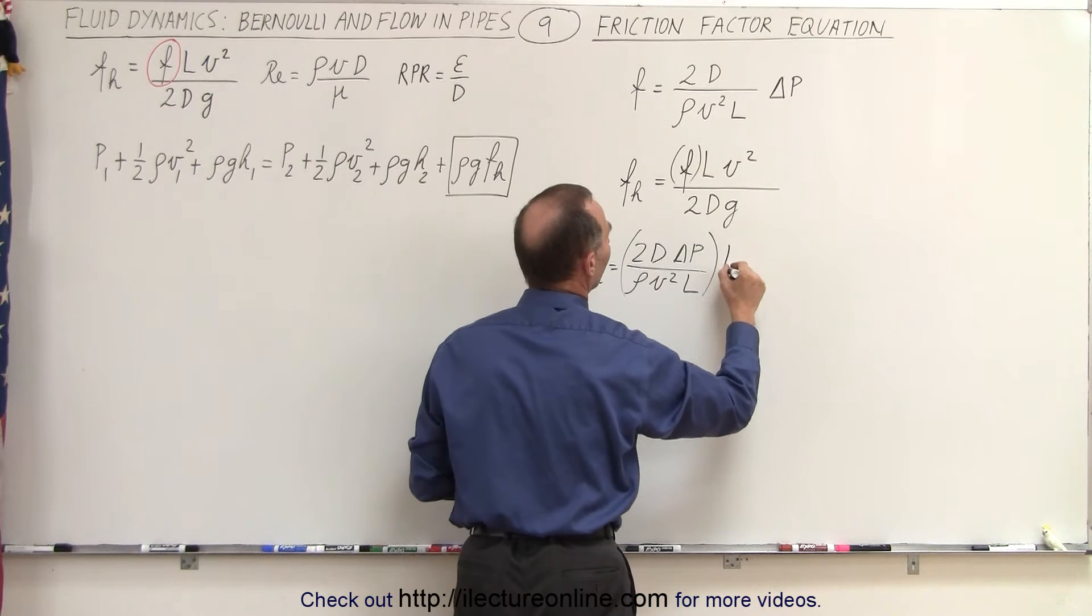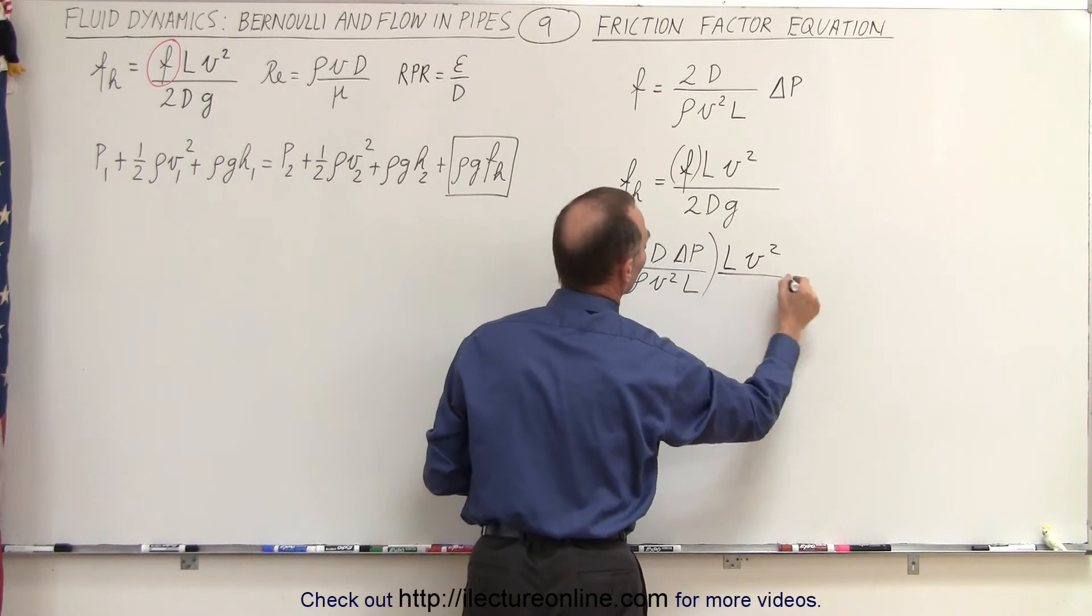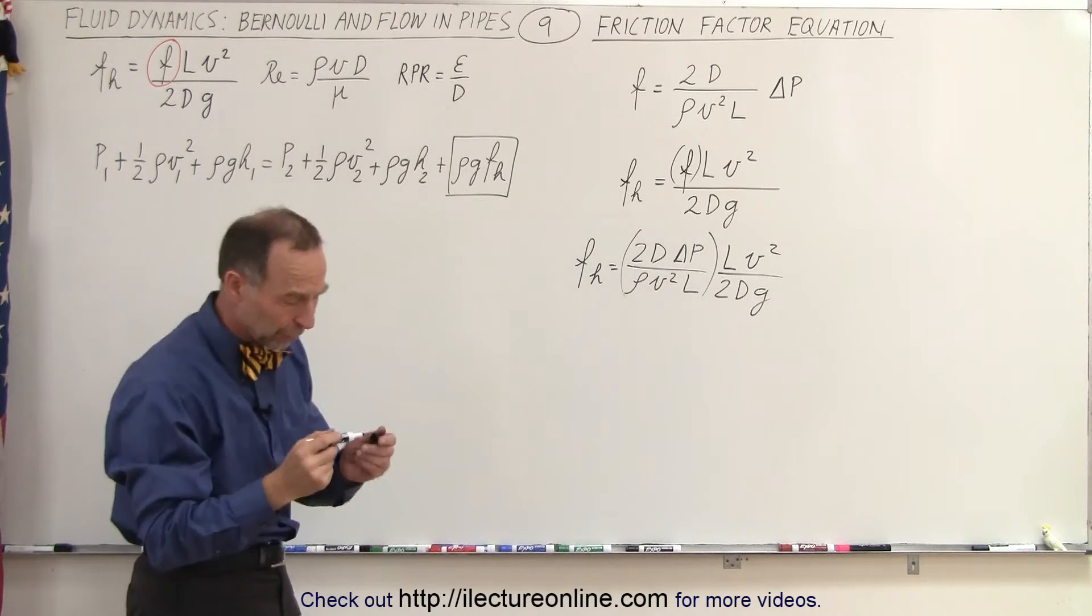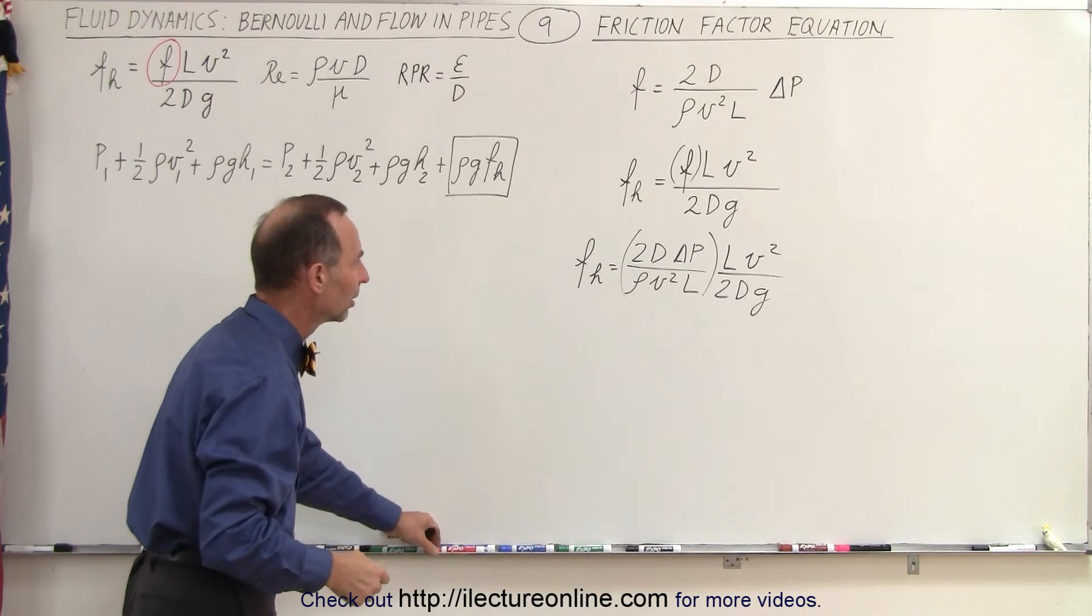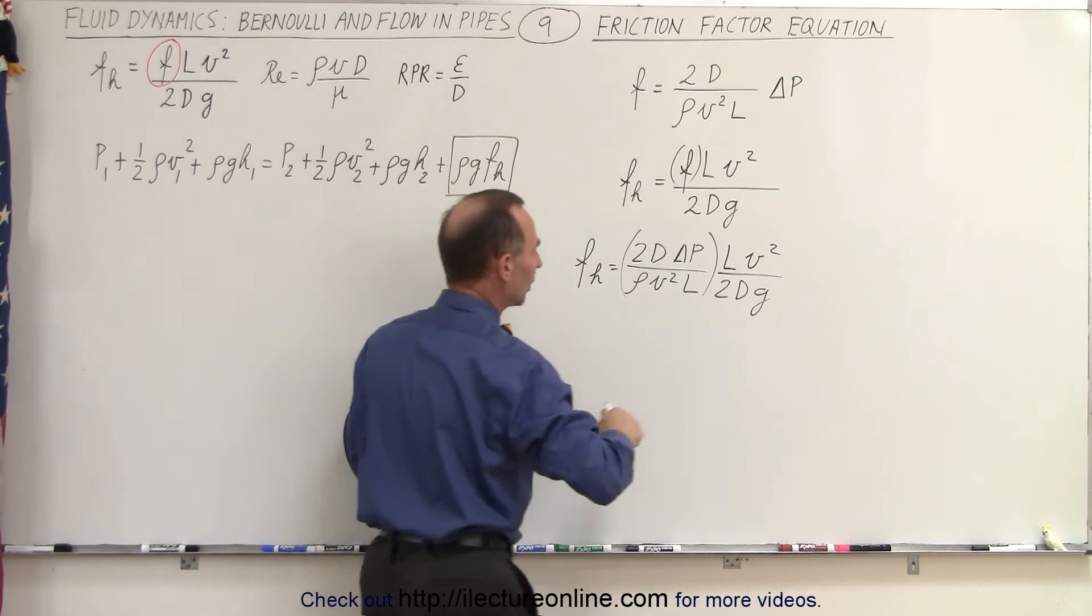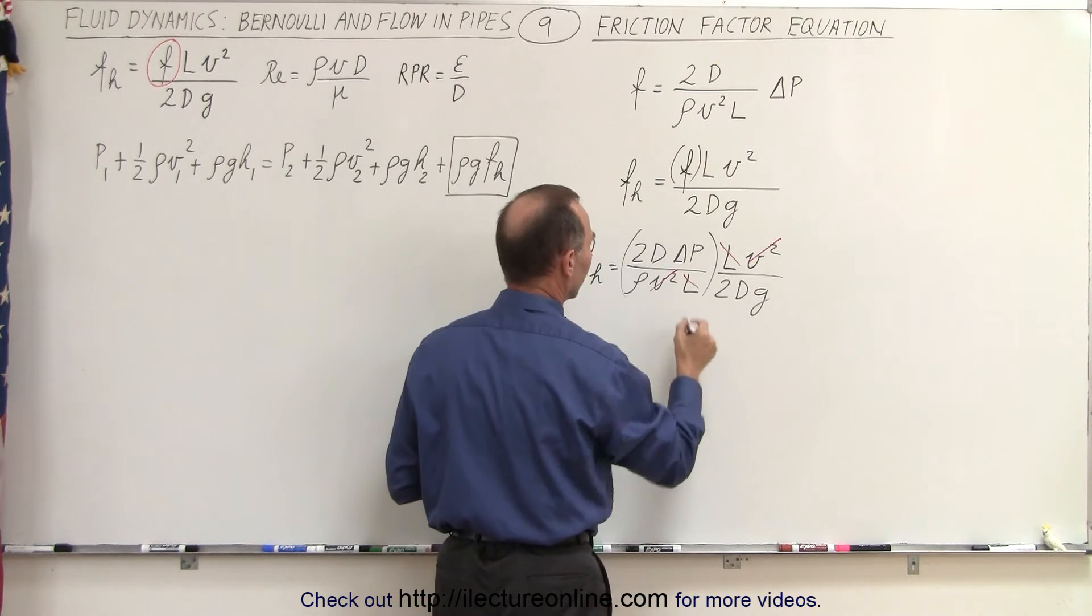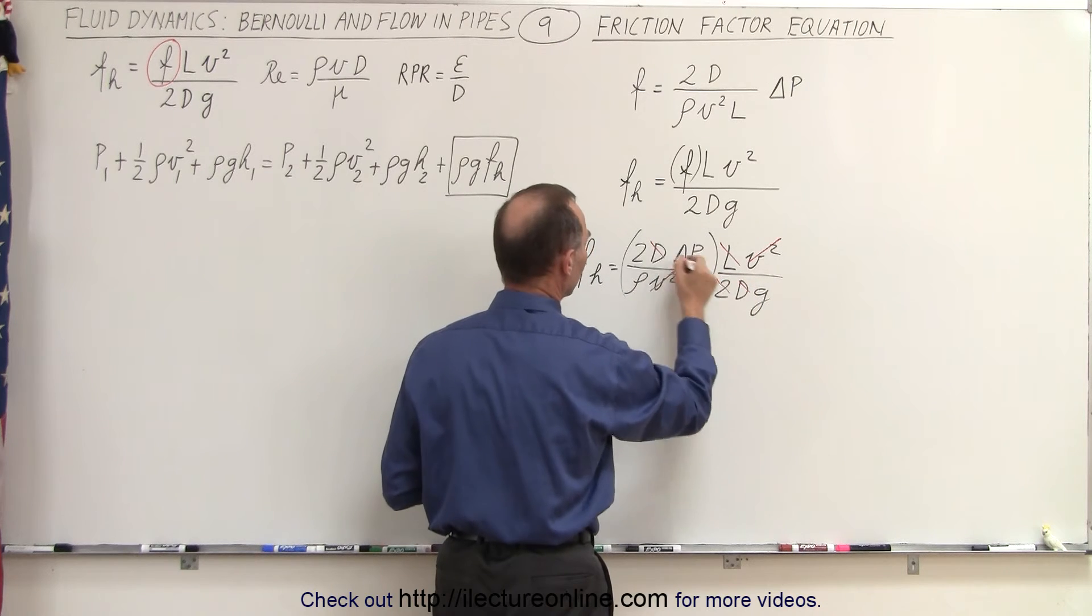We multiply that times L times velocity squared divided by 2 times the diameter times G. Now we're going to have some fun by canceling out common terms. So here we have V squared and V squared. We have L and L. We have D and D and 2 and 2.